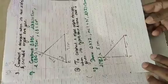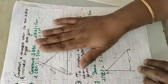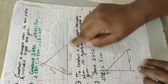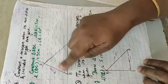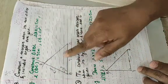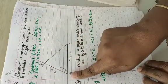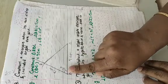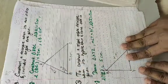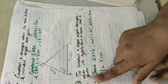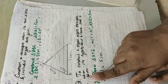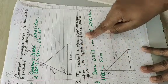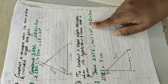After that, we saw how to construct a triangle when its two sides and the included angle are given — that is, AB and BC are the two sides and angle B is the included angle. Then we saw the fourth construction: constructing a right-angle triangle when its hypotenuse and one side are given.